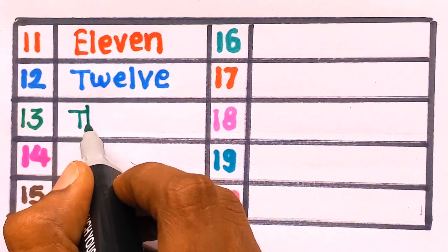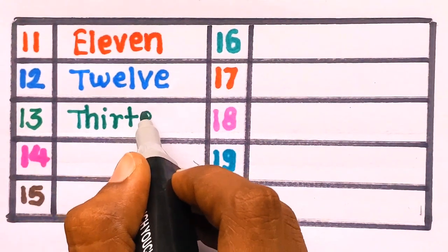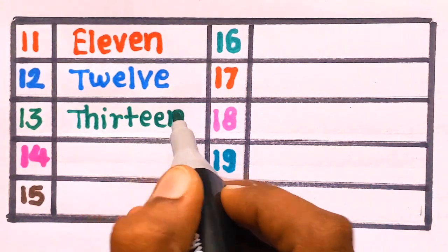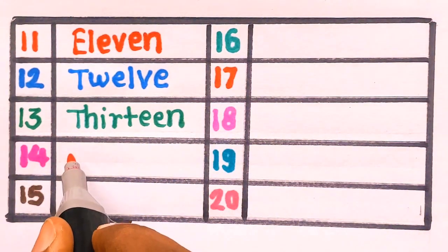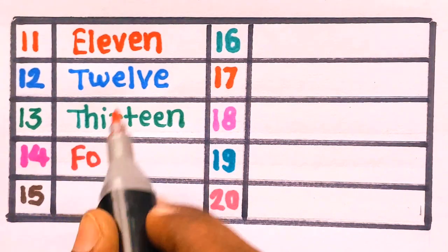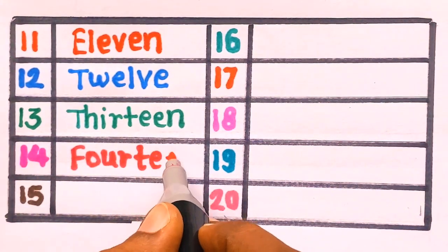T H I R T E E N, thirteen, 13. Next is 14, 14, F O U R T E E N...